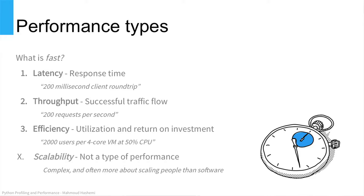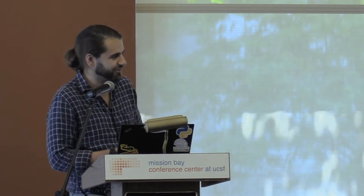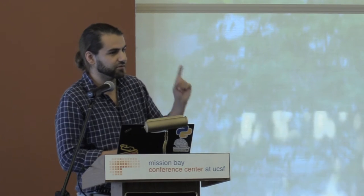Then we have throughput — that's successful traffic flow, how many successful transactions or requests are moving through the system. So, 200 requests per second — that's decent, that's respectable for enterprise software. And finally, we have efficiency. This one can be very important if you have a low margin business, like a gaming company or stock trading. You really care about utilization and your return on investment. You say something like, we can support 2,000 users per four core VM.